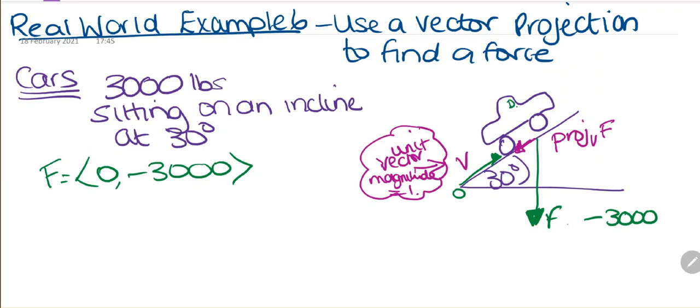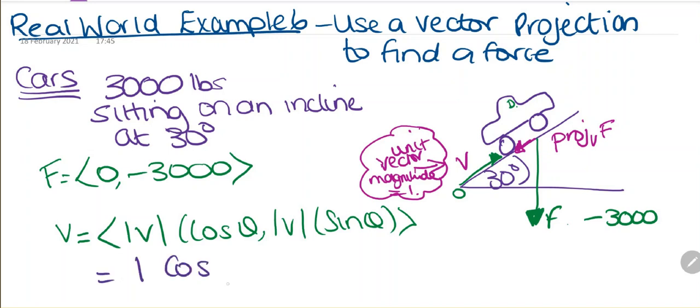We're going to project the force onto v so we can see how much force we need to push against the car to stop it rolling down the hill. Using the unit vector, we use cosine of the angle and sine of the angle. Our unit vector is 1, so this is 1 times cosine of 30 and 1 times sine of 30.